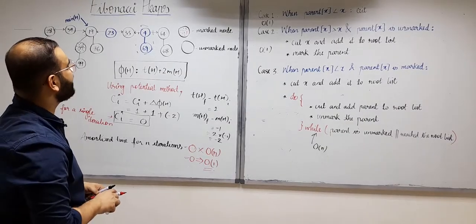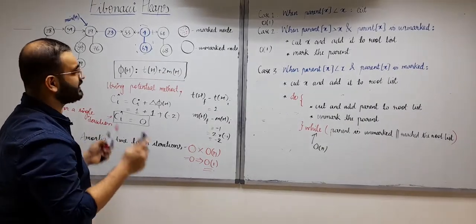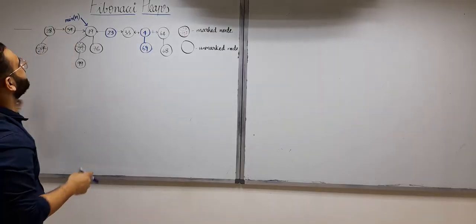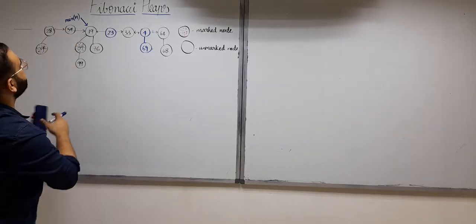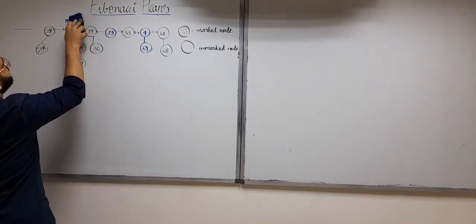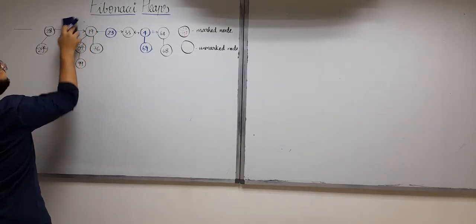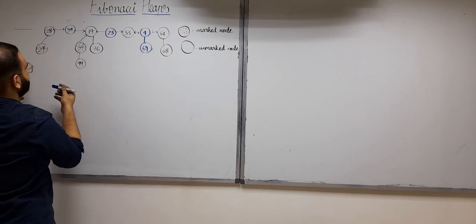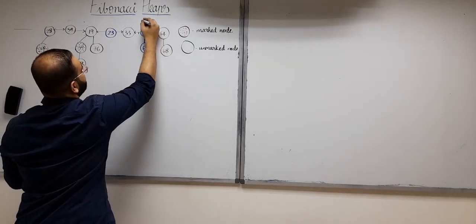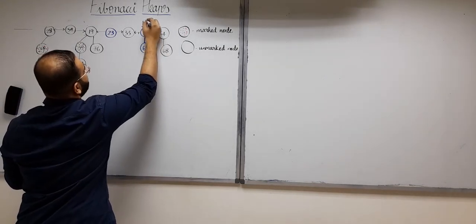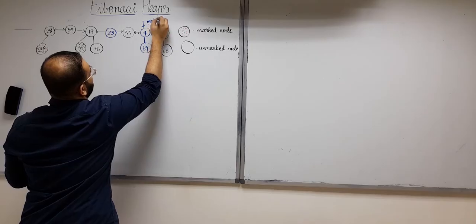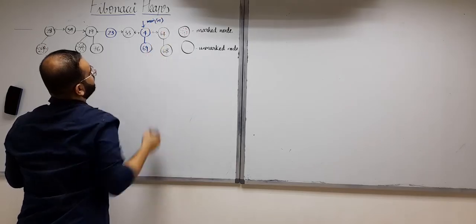That's it for the decrease key operation. I also forgot to mention that the minimum pointer of H will be updated — instead of pointing at 19, it will now point at the new minimum which is 4.